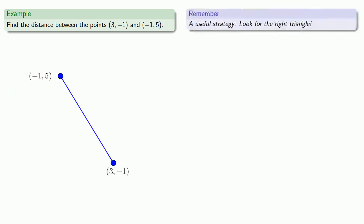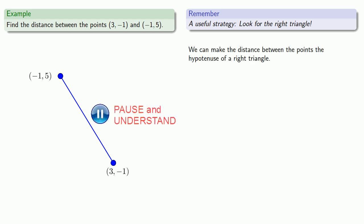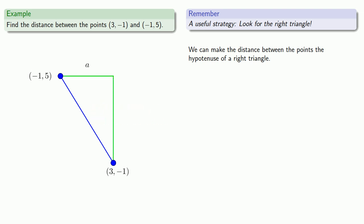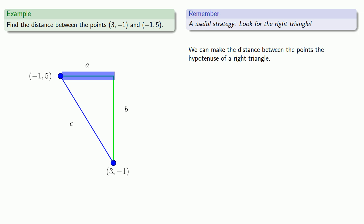Now let's look for the right triangle. The key here is to not make things too difficult — the length we're interested in runs between these two points, so we can make the distance between the points the hypotenuse of a right triangle. If we drop horizontal and vertical lines from these points, they'll form the other two sides of the right triangle. The horizontal side begins at x-coordinate negative 1 and ends above a point with x-coordinate 3, so its length is 4 units.